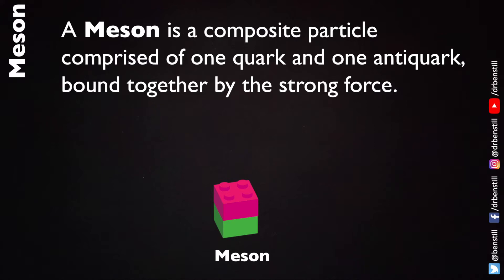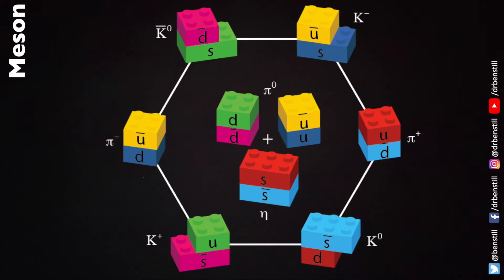It doesn't matter which quark and which antiquark — different quark-antiquark combinations produce different mesons. The pions on the left and right here are the lightest known mesons. They are made of up and down quarks and antiquarks, and so just like the lightest baryons — the proton and neutron — the combination of the lightest quarks produces the lightest mesons.